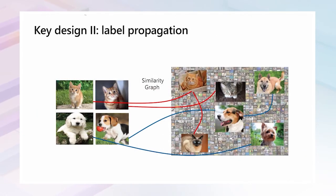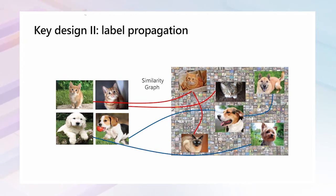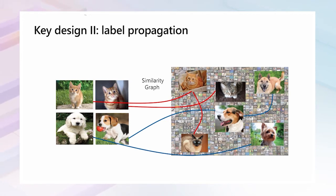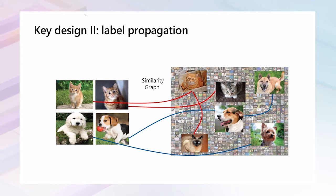The second key design is an additional label propagation step to enrich labeled images for fine-tuning. Firstly, we build a similarity graph between labeled and unlabeled data using the similarity between their pre-trained features. Secondly, we propagate existing labels from labeled to unlabeled images, and all unlabeled images are assigned labels which are used in the following fine-tuning stage.